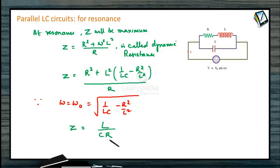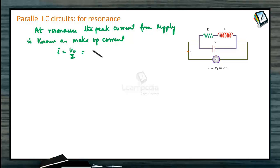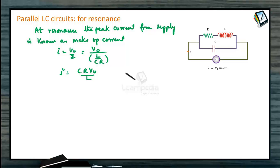The peak current from the supply at resonance is known as the make-up current: I equals V-zero by Z, which is V-zero divided by (L by CR). So I equals CRV-zero divided by L. For values of L, C, R, and omega satisfying omega equals root(1/LC minus R²/L²), the reactive component of admittance is zero. At such maximum impedance, the current in the circuit is minimum.